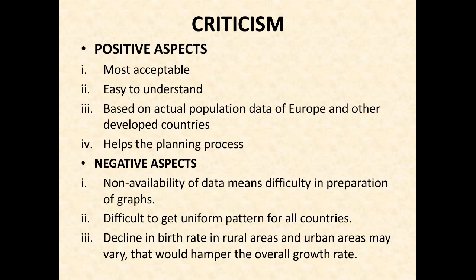Here we have some negative aspects. First is non-availability of data, meaning difficulty in preparation of graphs. If data is not available, there will be a problem in preparing the graph and we cannot determine the demographic transition model. Second, it is difficult to get a uniform pattern for all countries, as not all countries follow the same growth pattern — some can go from Stage 2 directly to Stage 4, skipping Stage 3. Third, decline in birth rate in rural and urban areas may vary, which would hamper the overall growth rate.